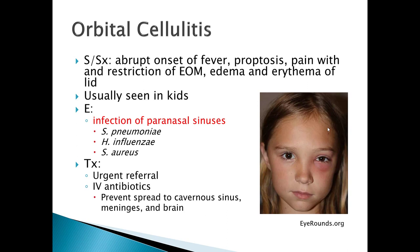Orbital cellulitis is a more concerning condition. Signs and symptoms include an abrupt onset of fever — generally higher than with periorbital cellulitis — proptosis with the eyes pushing out, that bug-eye look, and pain with restriction of extraocular movement. When you draw the H pattern and watch their eyes, you'll see restriction in the affected eye. There will also be edema and erythema of the lid.